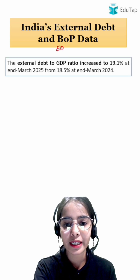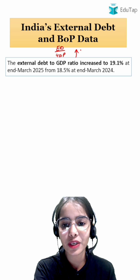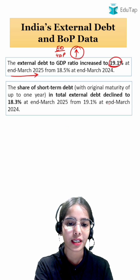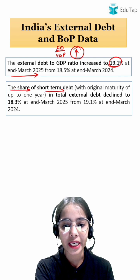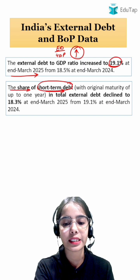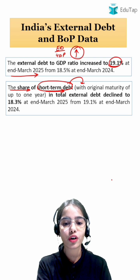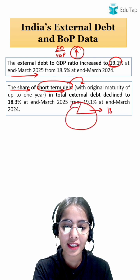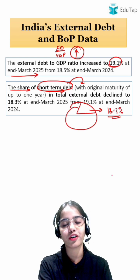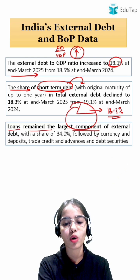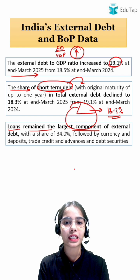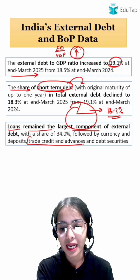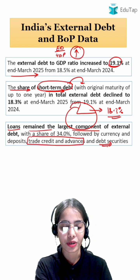First of all, the external debt to GDP ratio has increased to 19.1% at the end of March 2025. The share of short-term debt — that is, debt with original maturity of up to one year — has declined to 18.3% at the end of March 2025. Loans remain the largest component of external debt, followed by currency and deposits by non-resident Indians, then trade credit and advances, and debt securities.